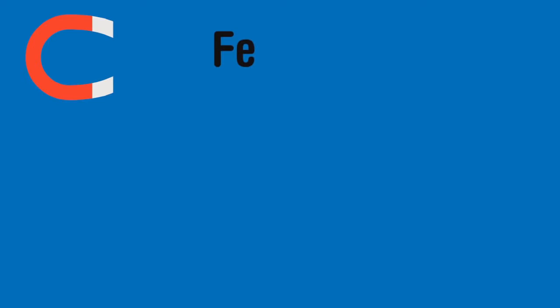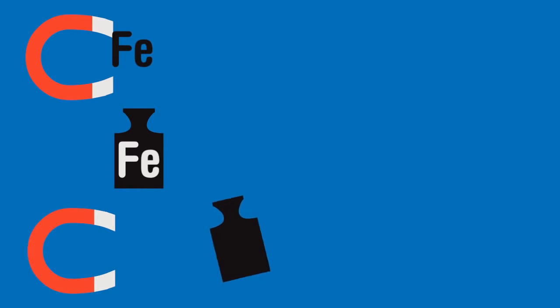One premise might say magnets attract iron. The other premise might be this object is made from iron. Without seeing it you can logically say that the magnet will attract this object.